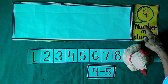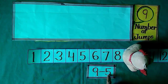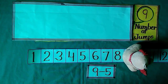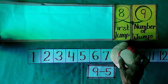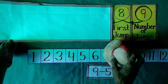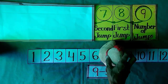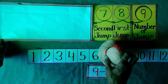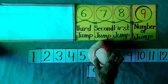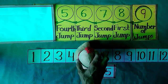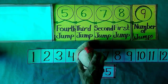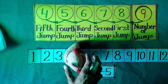Now Jimmy stands at 9 and he wants to take 5 backward jumps. Let us see where he reaches after 5 backward jumps. With first backward jump, he reached at 8. With second backward jump, he reached at 7. With third backward jump, he reached at 6. When he takes his fourth backward jump, he reached at 5. When he takes his fifth backward jump, he reached at 4.